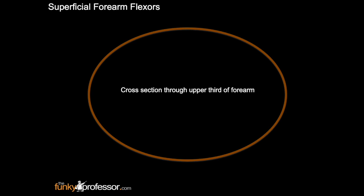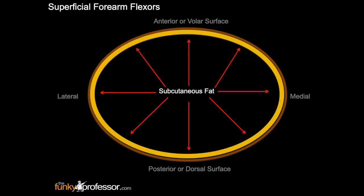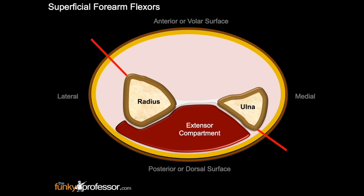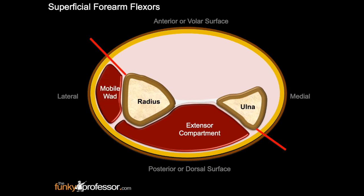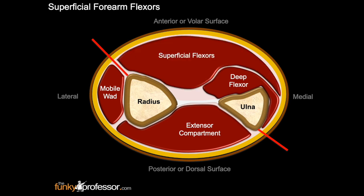This is a diagram of the cross section through the upper third of the forearm. At the top is the anterior or volar surface, and at the bottom is the posterior or dorsal surface. To the left is the lateral surface, and to the right is the medial surface. The next layer under the skin is the subcutaneous fat. Shown are the ulna, the interosseous membrane, and the radius. The extensor compartment is shown posteriorly, the mobile wad laterally, the deep flexor compartment next to the ulna, and the superficial flexors towards the upper surface of the cross section.